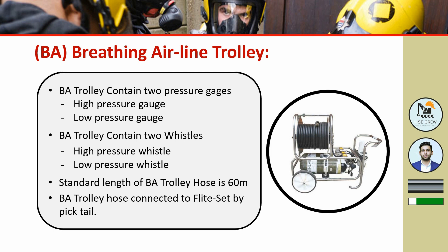The standard length of the breathing airline trolley hose is 60 meters. The hose is connected to the flight set by a pigtail. We use breathing airline trolleys for working in confined spaces where there is a deficiency of oxygen or toxic gases present, and where we need to work for an extended period of time. The trolley has two cylinders: one is in use for breathing and one is on standby. After 33 minutes, the operator opens the second cylinder, closes and removes the first, and replaces it.